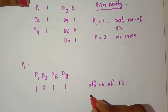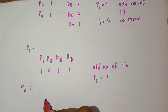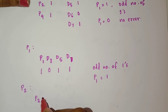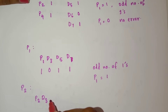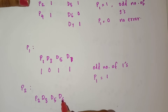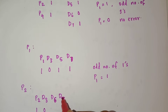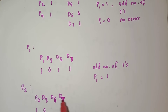The value of P1 is 1, meaning there is an error. Next, for finding P2, the rule is: check 2 bits, skip 2 bits. That means P2, D3, D6, D7 are used. The value of P2=1, D3=0, D6=0, D7=1.